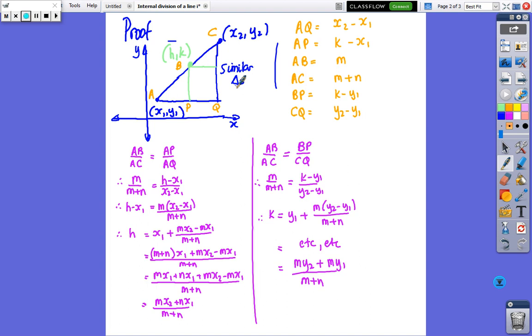So, AB is the distance along the bottom, so it's the difference between x's. AP is the difference, so that should be h minus x1. Okay, so the difference of x and x1. AB is going along the line, so that's m, and AC is m plus n, because that was m, m plus n. BP is coming down here, so there's a difference in the y, so it's k minus y1. And, CQ is the difference in the y's, y2 minus y1. So, those distances come from that triangle.